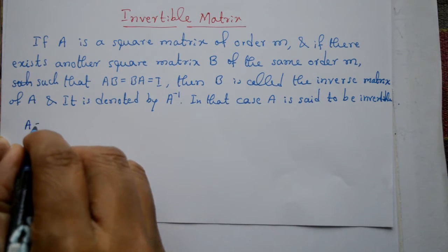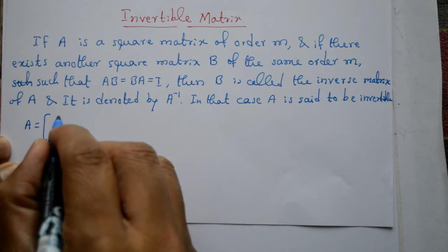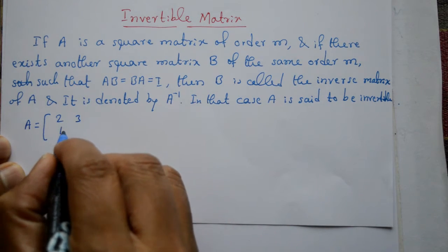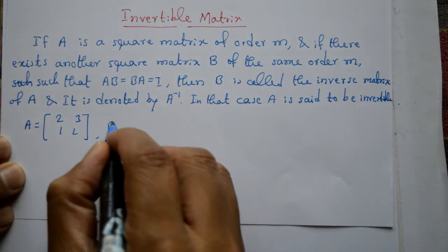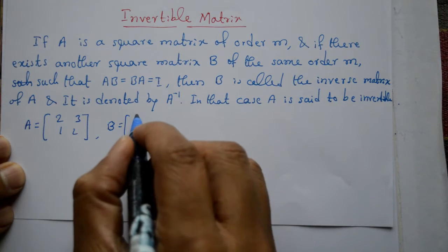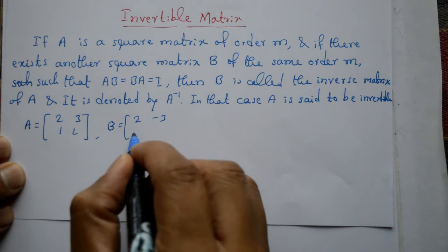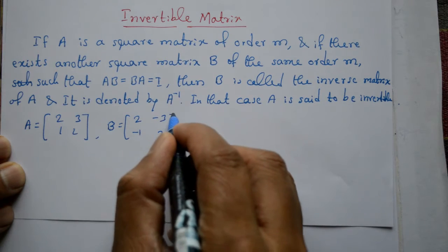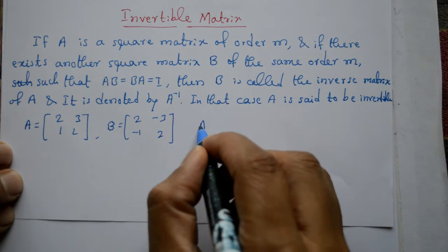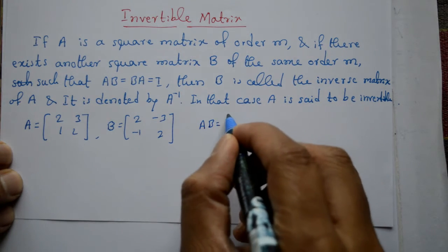Yahan ek example dekhte hai. Matrix A hai, A is equal to 2, 3, 1, 2. And B matrix same order hona chahiye, B is equal to 2, minus 3, minus 1, 2. Yahan hum kya karenge, A into B multiply karenge.